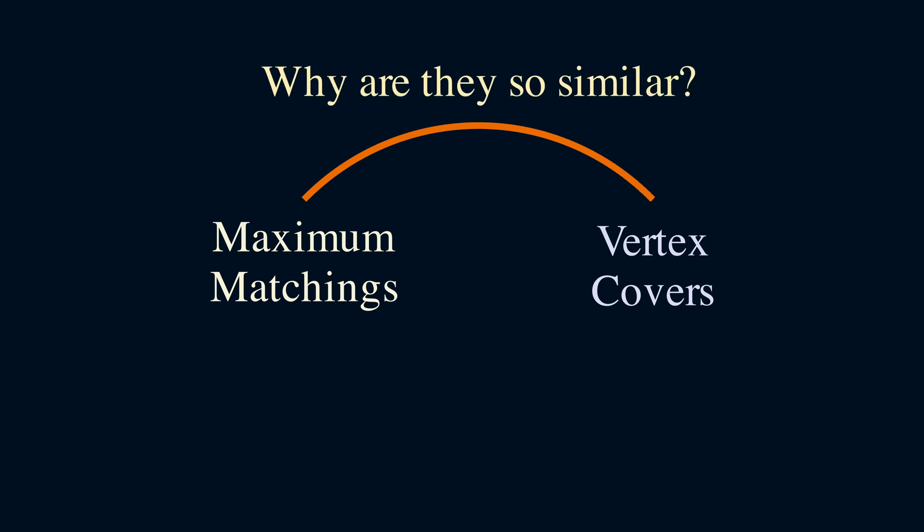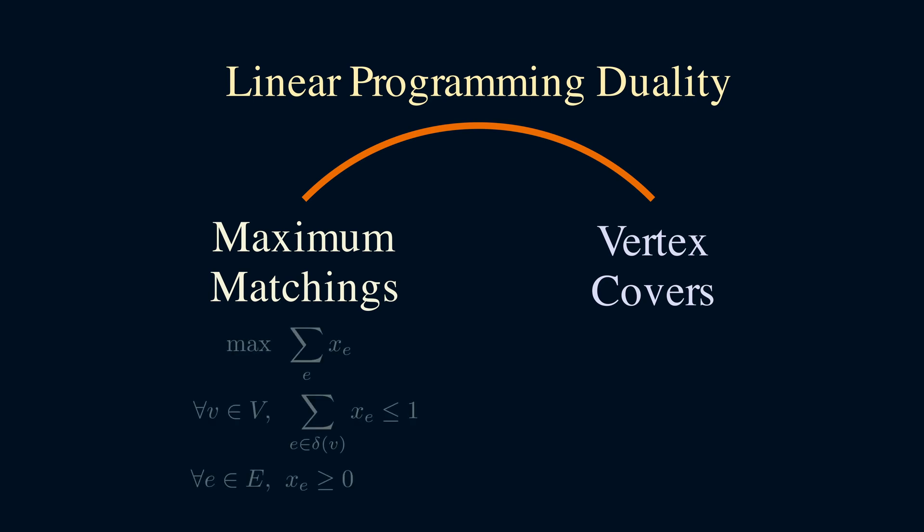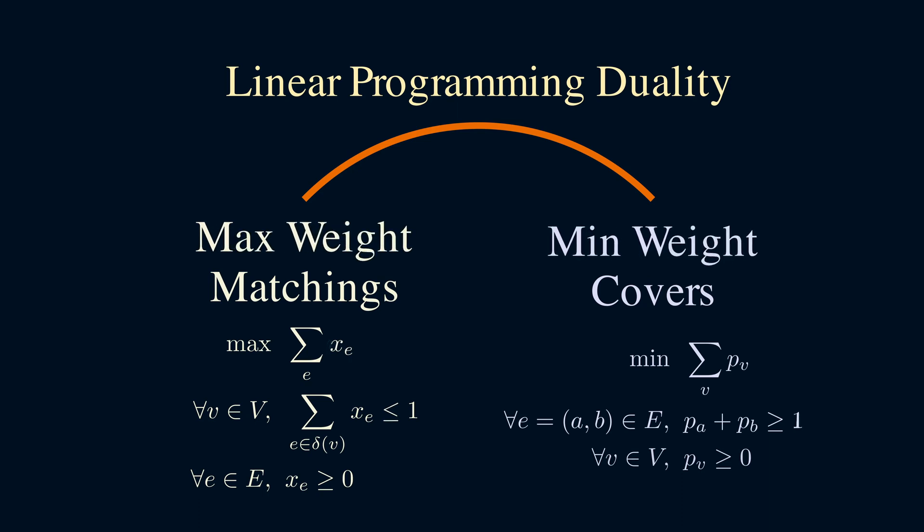An interesting thing we observed so far is how matchings and vertex covers seem to be so similar. It begs the question, does there exist other problems that are also very similar? The theory underlying their relationship is linear programming duality. Every linear program has a dual program. Maximum matchings and minimum vertex covers are dual problems of each other. A linear program and its dual always have the same optimal objective value. Therefore, Koenig's theorem is just a special case of linear programming duality. The same thing can be said of weighted matchings and coverings, so Egerváry's theorem is also just a special case of LP duality. The Hungarian algorithm is an example of the primal dual method. In this method, we maintain a dual solution, which are the prices here, and try to improve it in each iteration. This primal dual method is a general method that can be extended to other problems as well.